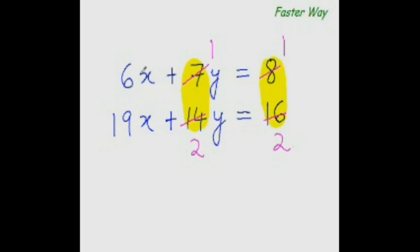All right, so x equal to 0, as simple as that. Just quickly substitute this value in any of these two equations. So x equal to 0, so 6 times 0 is 0, so this thing becomes 0. Now what is left? 7y equal to 8, so y would be equal to 8 over 7.